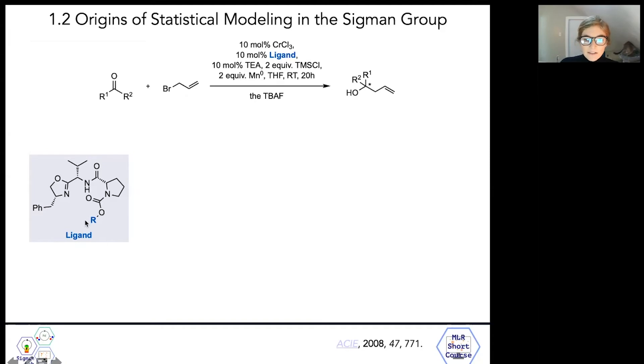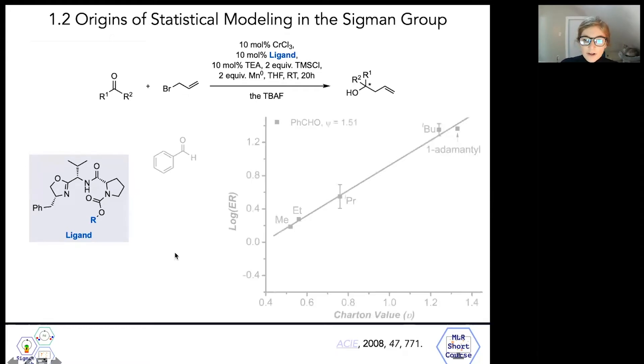Miller began this study by interrogating the substituent effect by systematically altering the steric profile at the proline substituent, and found a good correlation between the enantioselectivity of the benzaldehyde allylation products and Charton's steric descriptor, which as a reminder is an empirical parameter that Charton based off of Taft's original steric descriptor.